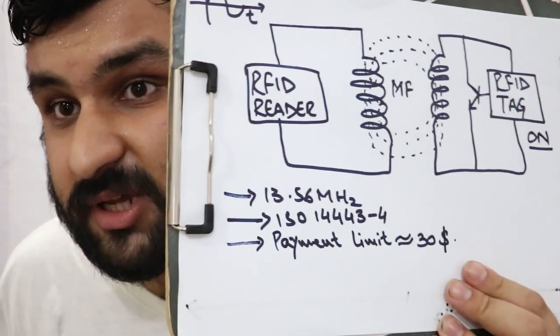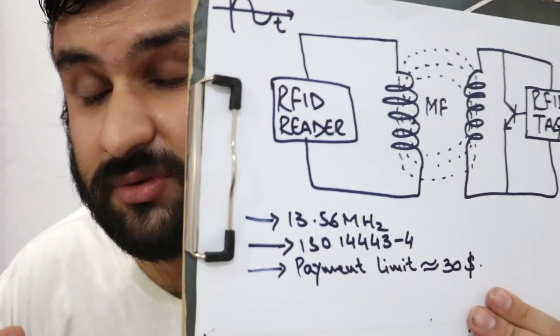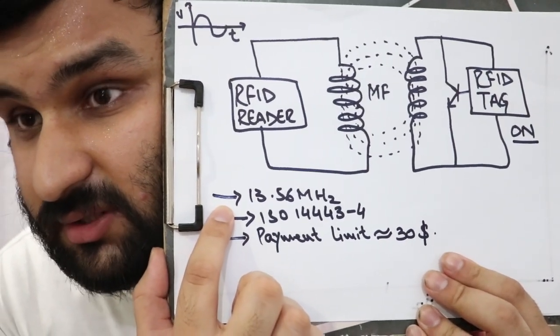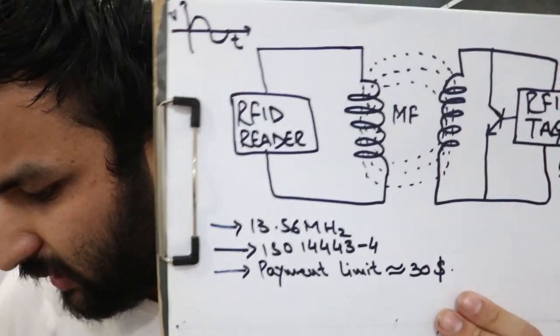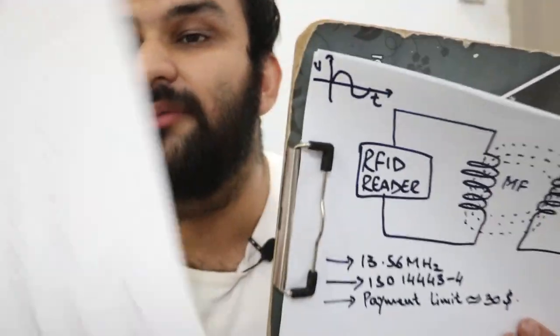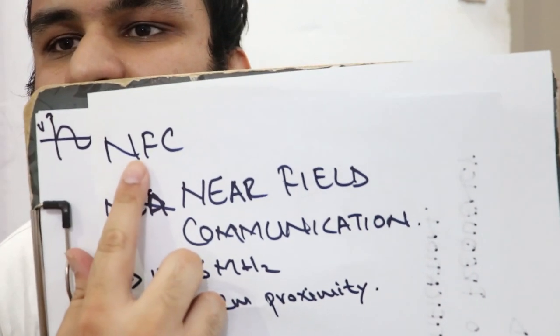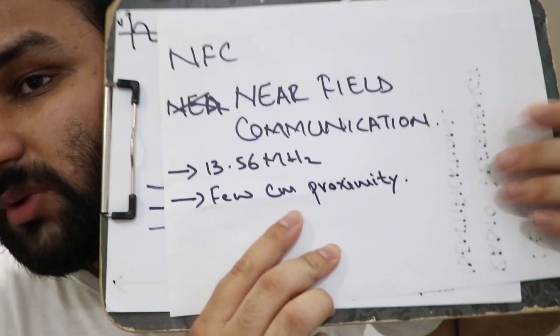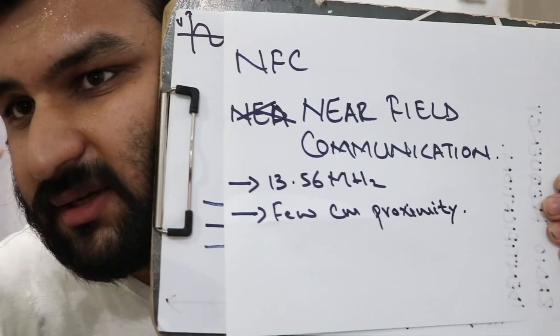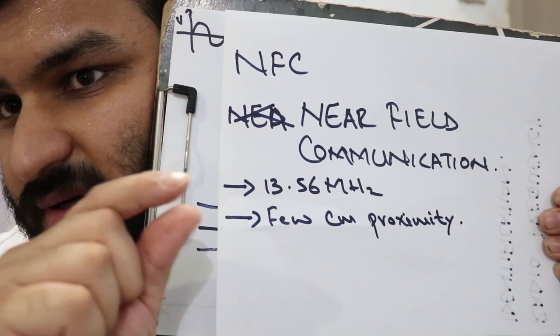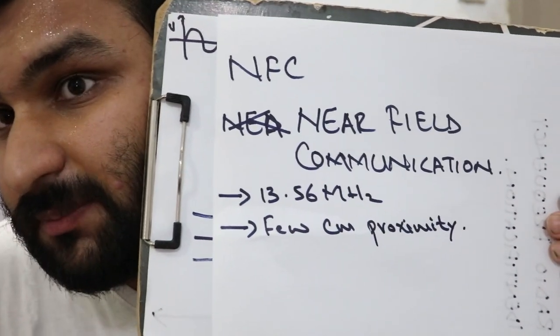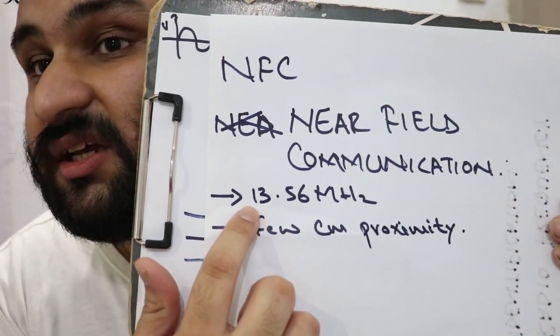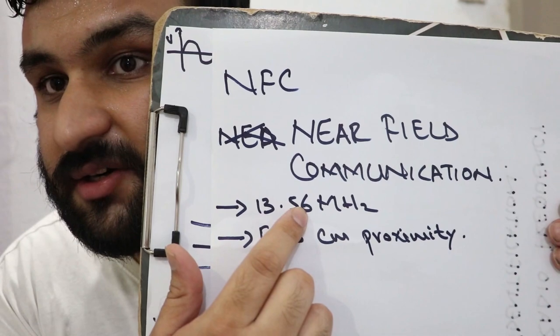We're talking about the contactless payment method. The contactless payment method uses NFC. NFC stands for Near Field Communication. It basically has like a few centimeters of gap to make it work and it uses a frequency of 13.56 megahertz.